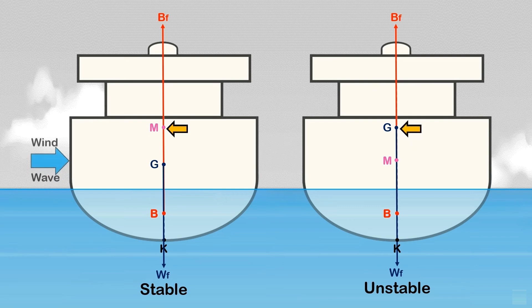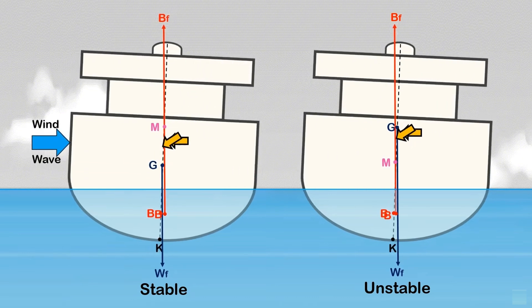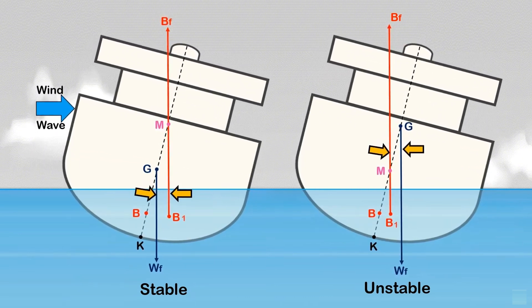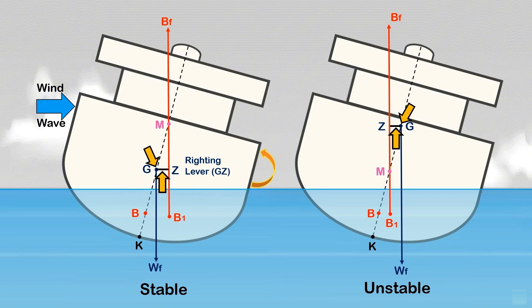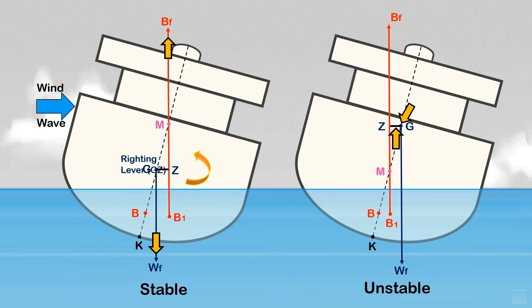When heeled by external forces to some angle, as the weight force and buoyancy force become separated, a righting lever or righting arm is created, known as GZ. GZ, or righting lever, is the horizontal distance between the center of gravity G and the vertical line of action of the buoyancy force. In stable condition, taking moments about the ship's center of gravity G, there is a moment to return the ship to an upright position, since the righting lever is created on the low side — the weight force acts vertically downward on the high side while the buoyancy force acts vertically upward on the low side, creating a moment that will bring the ship to an upright position.